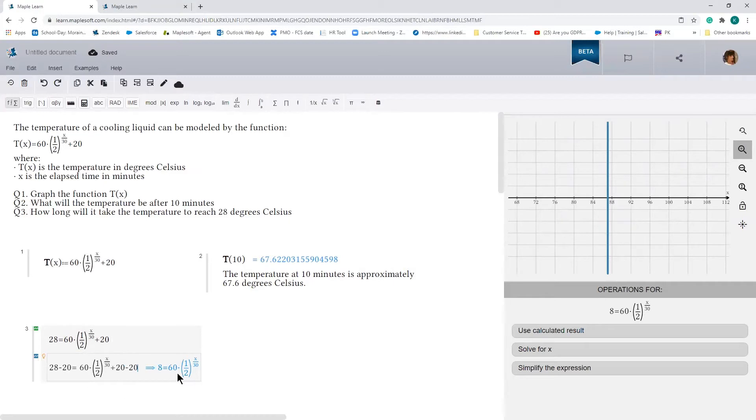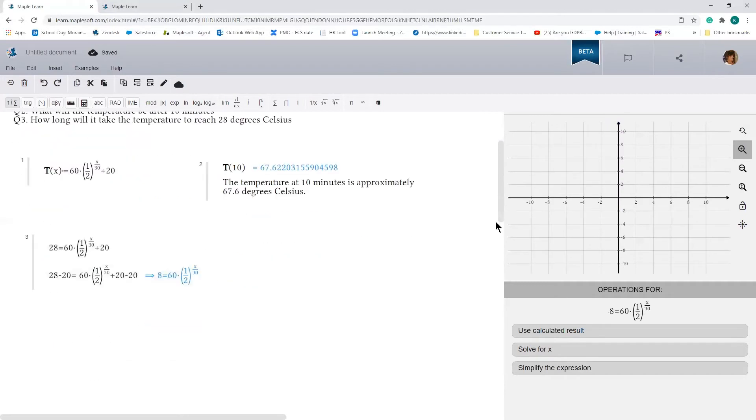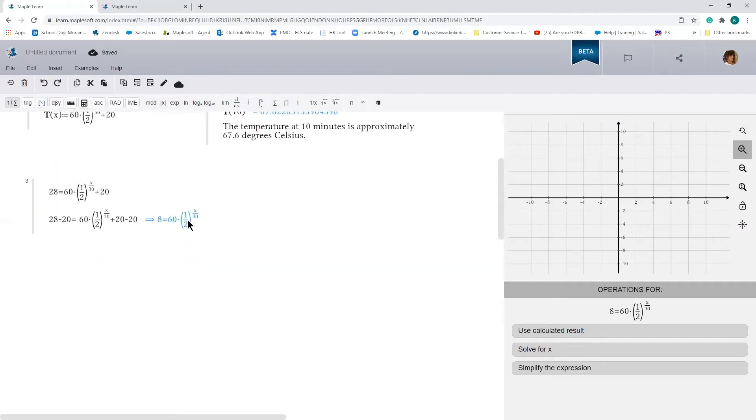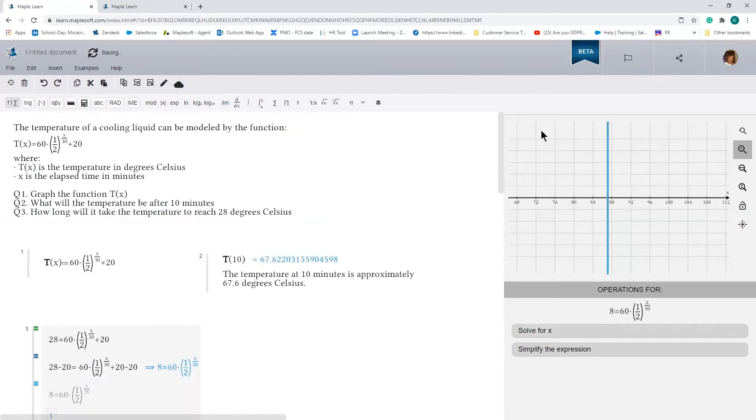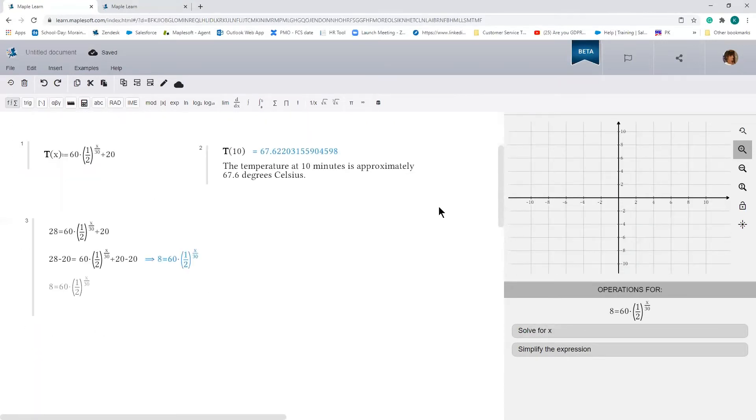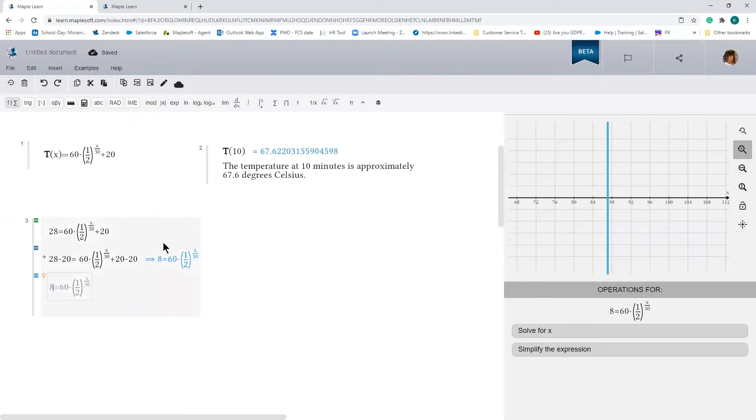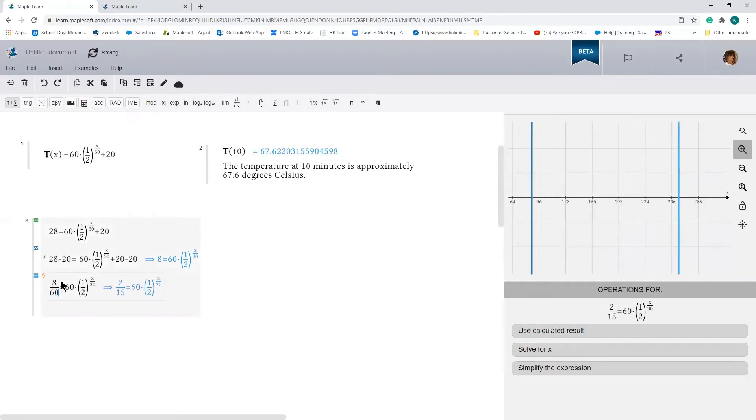Then we have to divide both sides by 60. Scroll down to give myself a little bit more real estate. So we can use the calculated results. And let's divide this by 60, divide the right hand side by 60 as well.